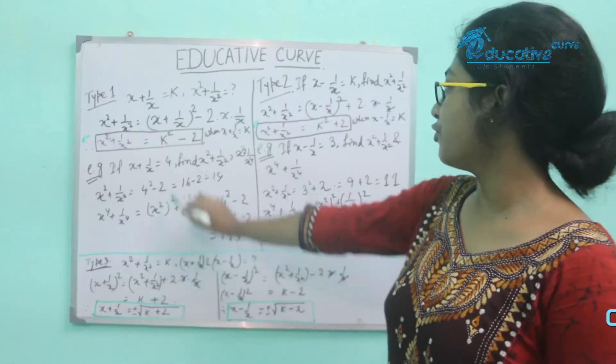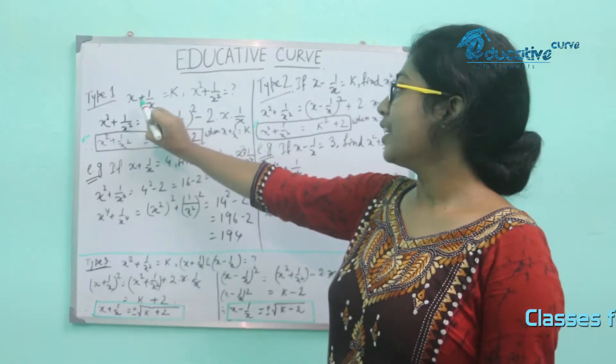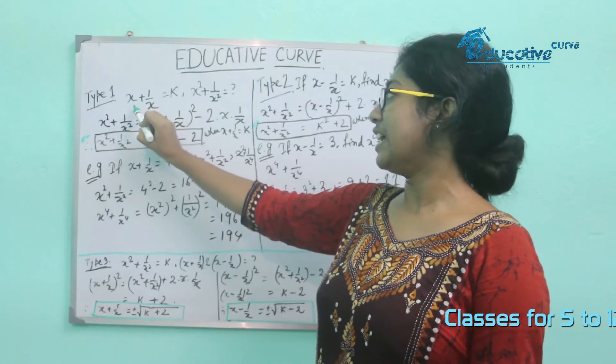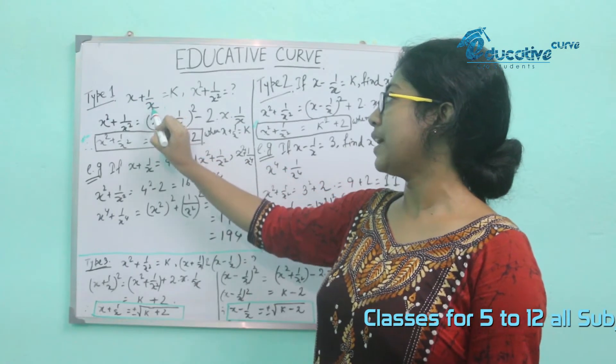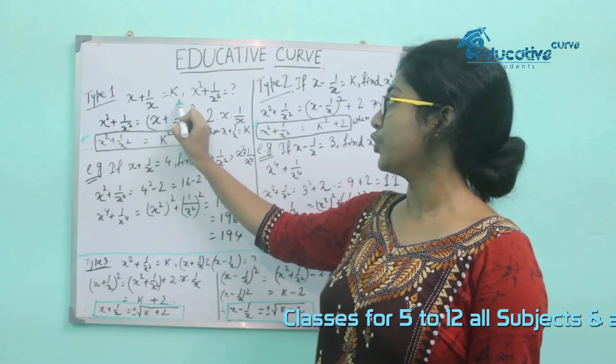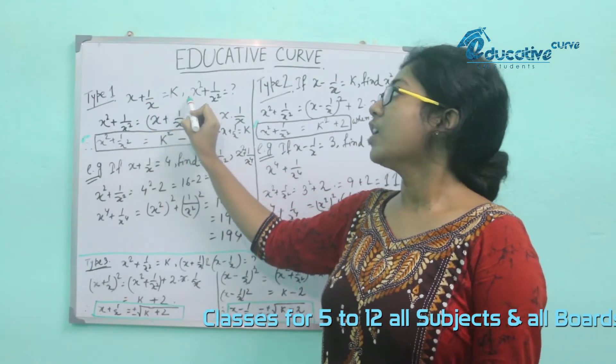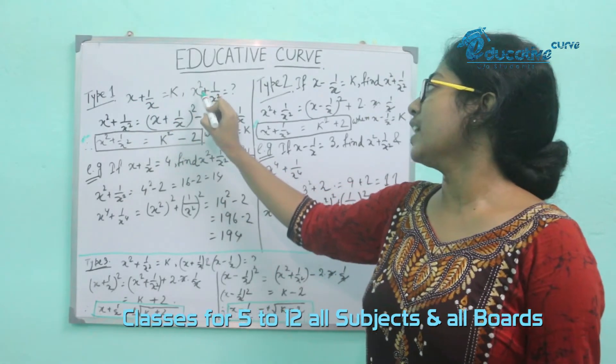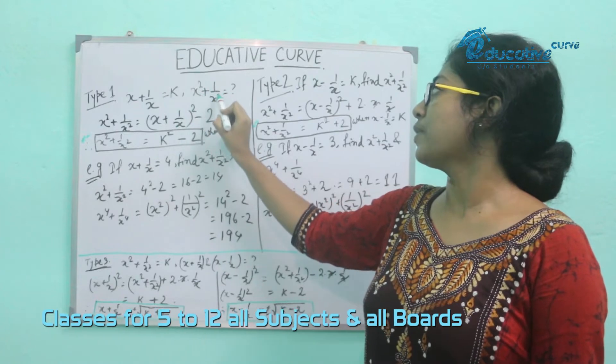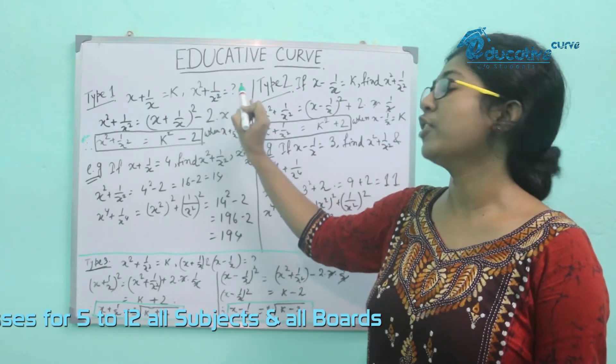First, Type 1: x plus 1 by x is equal to k. This gives us the x squared plus 1 by x squared value.